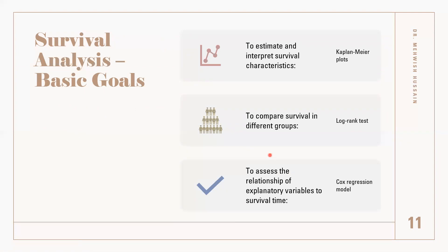So what are the goals of survival analysis? First, to describe the survival function, which we can achieve using Kaplan-Meier plots. We can also compare survival curves — like comparing the survival of gene A and gene B — which can be done using the log-rank test. And we can assess the relationship between survival time and a set of independent variables, which can be achieved by the Cox proportional hazards model. These three concepts will be covered in our next video. This concludes the description of survival analysis and censoring. Thank you.